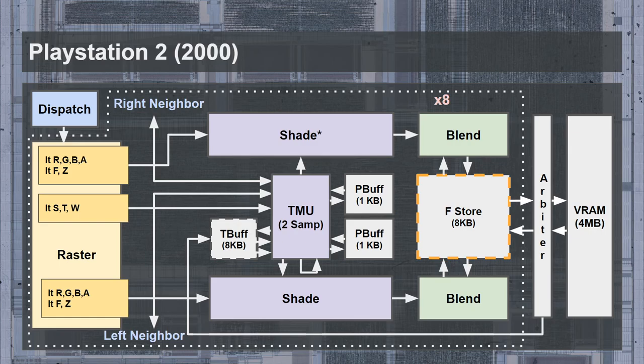There is also an 8 KB frame store buffer shared across all 16 pipelines, but it only allowed contiguous and aligned accesses. This buffer stores both depth and color information and had its own access pattern restrictions. Two of the most noticeable cases were an overdraw penalty of 7 cycles and a significantly higher penalty for page breaks. The overdraw penalty was to maintain memory consistency, and it is implied the frame store could not be written at the pixel granularity. Page breaks would require reloading the entire 8 KB frame store, hence why they would be so costly.